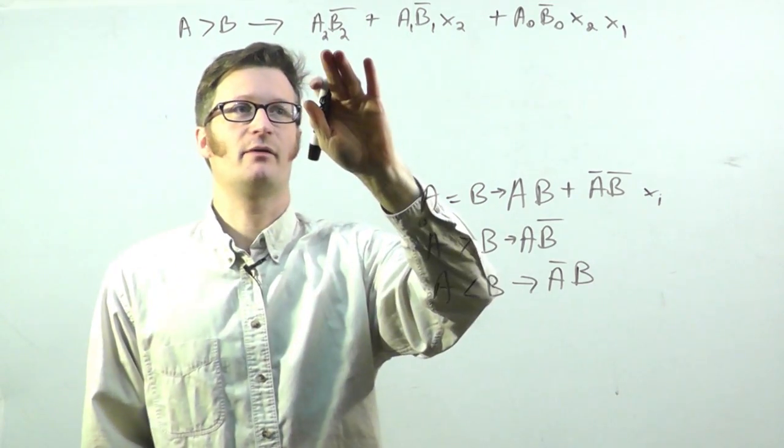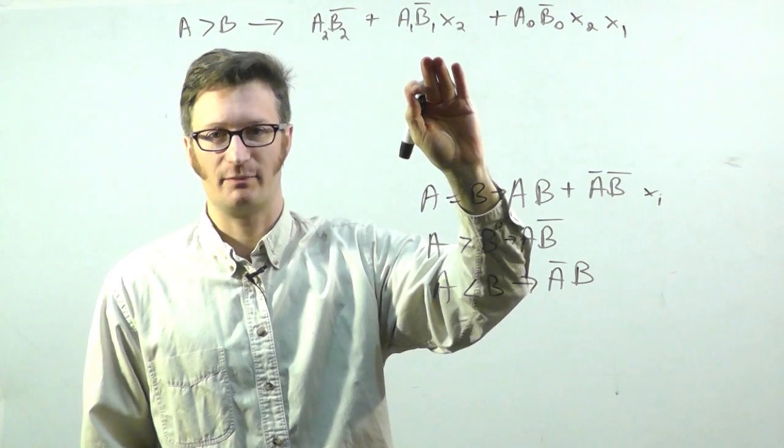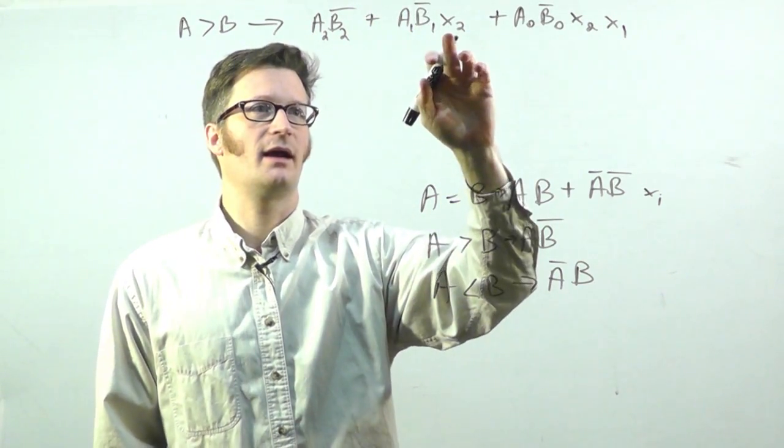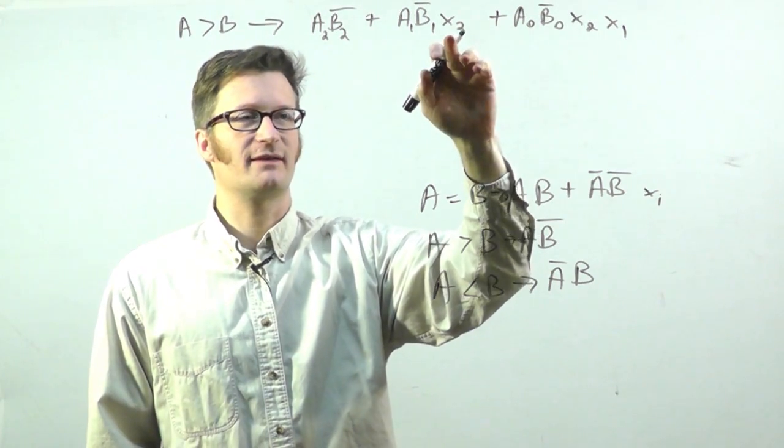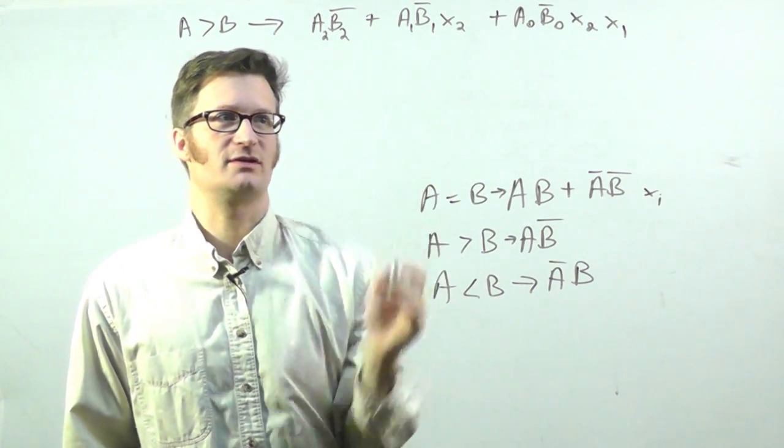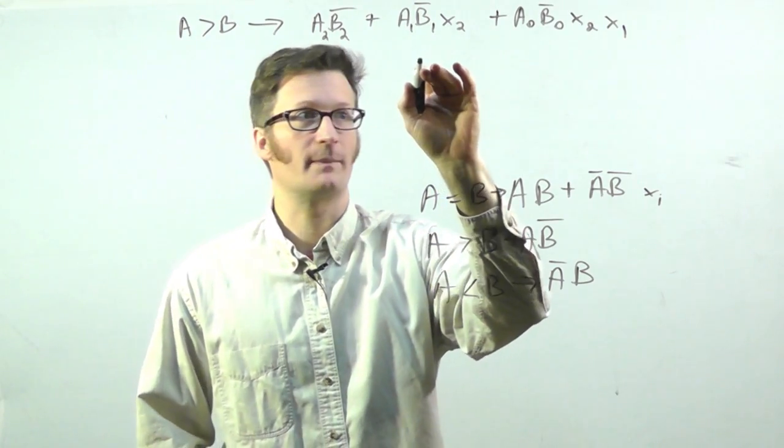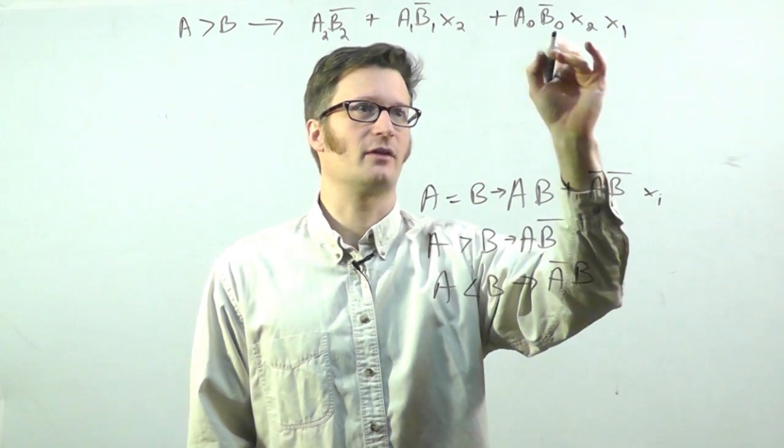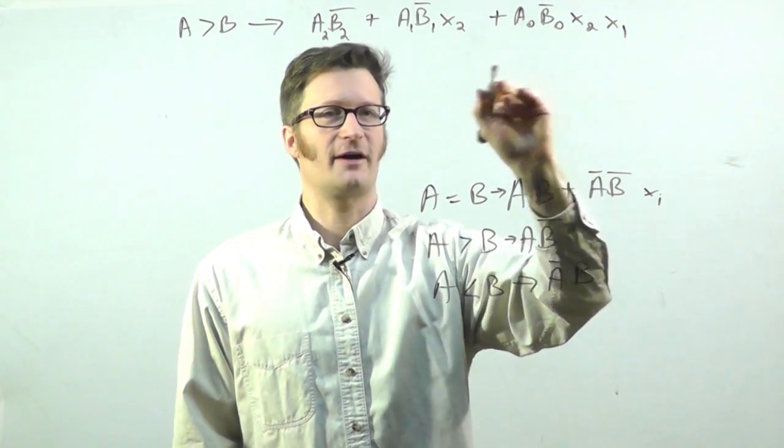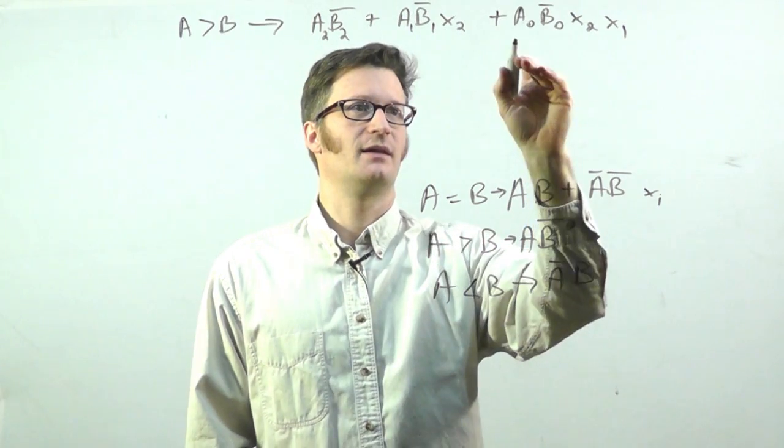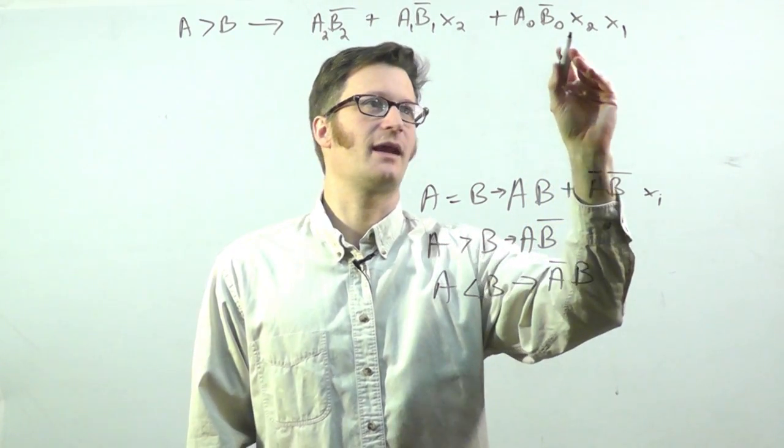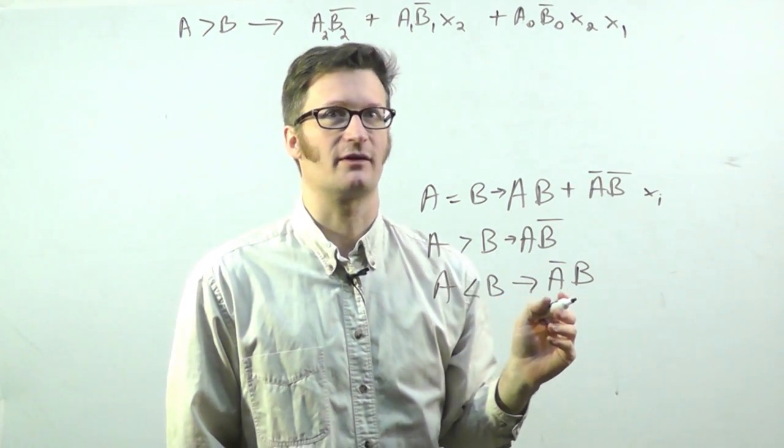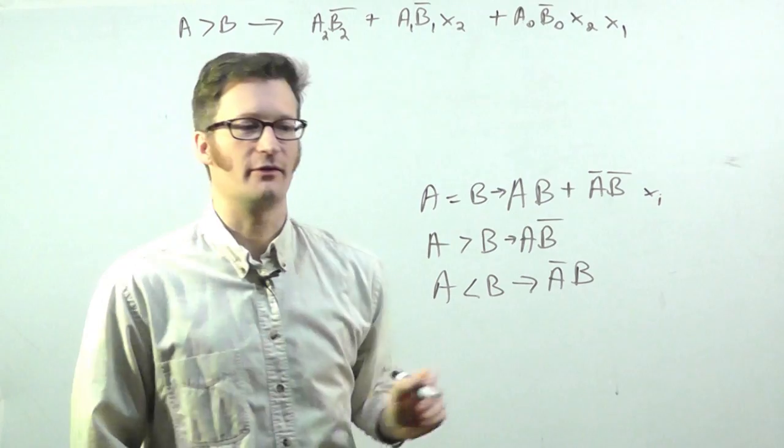And finally, we have A₀ B̅₀ X₂ X₁. And how we can interpret this is, well, we know from here A greater than B, for the most significant bit is just simply this. Well, if that evaluated to 0, then we're going to look at the next bit column. And so, if this is true and the previous bit column was equal to each other, then this will evaluate to 1. But let's say that didn't evaluate to 0. Now here, we have a final chance with the least significant bit. If A is greater than B here, and the previous more significant bits were equal to each other, then this will evaluate to 1 and A is greater than B.